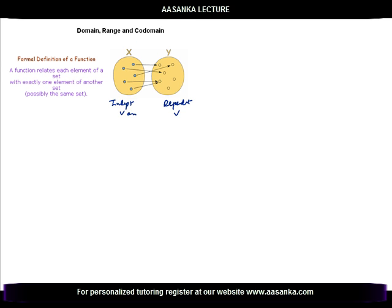If one element were related to two elements, it would never remain a function. So for this to remain a function, one element in x relating to two elements in y should not be there.